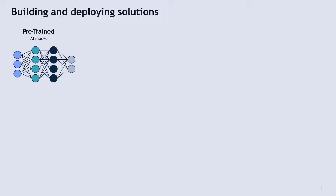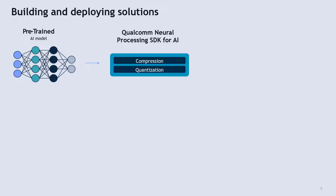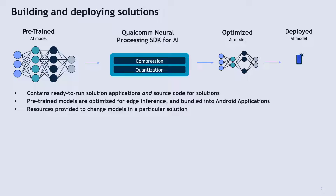This slide explains the process followed to develop a solution. First, we take the commercially available AI models, and then we use the Qualcomm Neural Processing SDK for AI to compress and quantize these models to generate optimized models. These optimized models are then bundled into deployable solutions. Currently, the solutions are Android applications. This toolkit contains ready-to-run solutions as application APK files and the source code for the solutions. The pre-trained models are optimized for edge inferencing and bundled into Android applications.